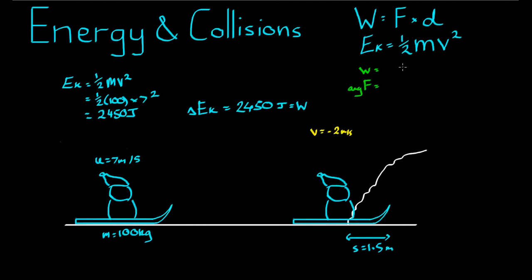The work done, it's not equal to the change in kinetic energy because let's have a look at the final kinetic energy here. Kinetic energy is equal to one half M V squared, which is equal to a half times 100 times 2 squared, that's 50 times 4 or 200 joules.